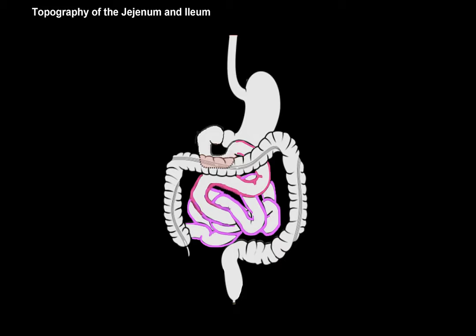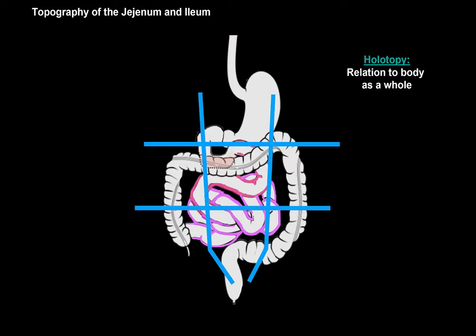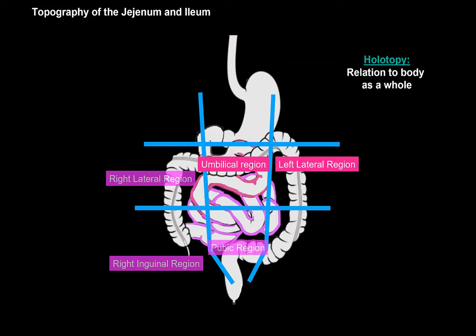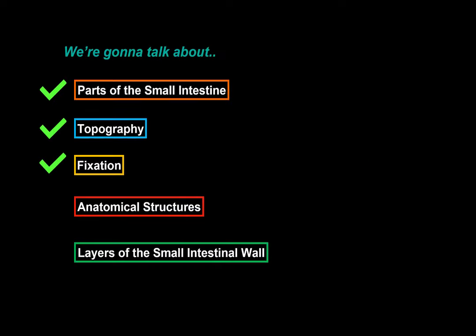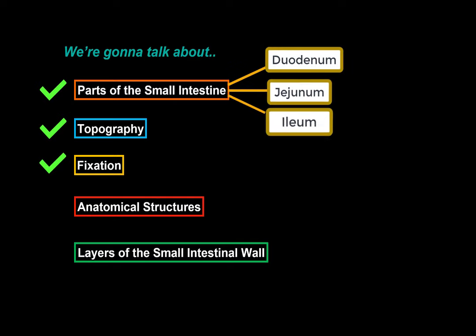The last topographical consideration is the holotopy — meaning relation to the body as a whole. The jejunum lies in the umbilical and left lateral regions, while the ileum lies in three different places: the pubic region, the right lateral region, and the right inguinal region. So that was the topography. You should now be able to recall the three parts of the small intestine — the duodenum, jejunum, and ileum — and have an approximate idea of their topography and how they're fixated to the posterior abdominal wall.